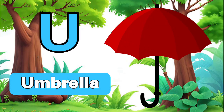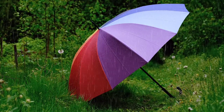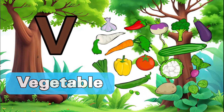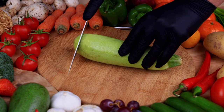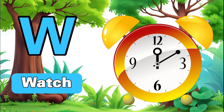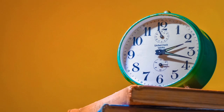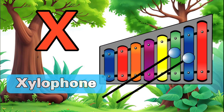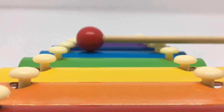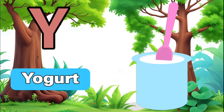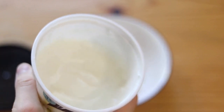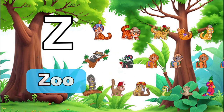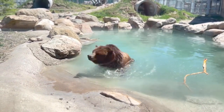U for umbrella. V for vegetable. W for watch. X for xylophone. Y for yogurt. Z for zoo. Bye-bye!